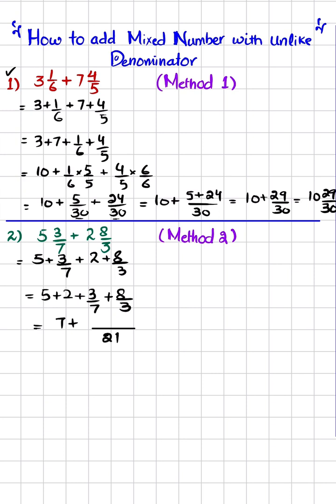So 21 divided by 7 is 3, and 3 multiplied by 3 is 9. Plus 21 divided by 3 is 7, and 7 times 8 is 56. So 9 plus 56 gives us 65, making it 7 plus 65/21, which is also equal to 7 65/21. And this is the answer to our second part.